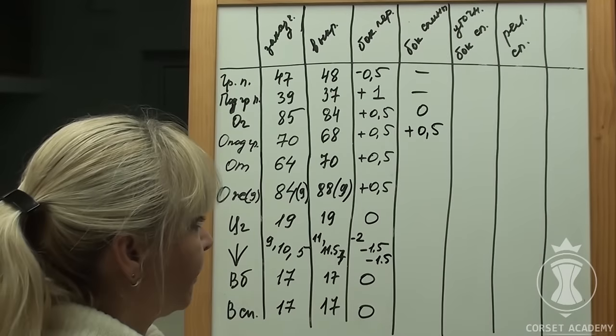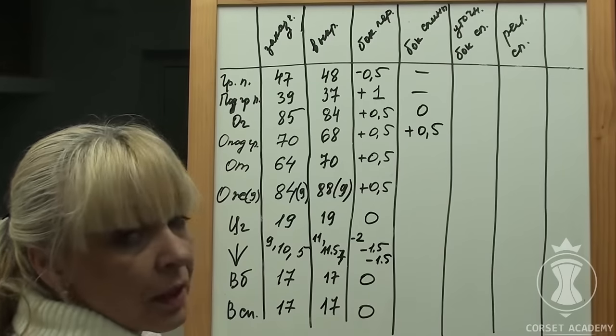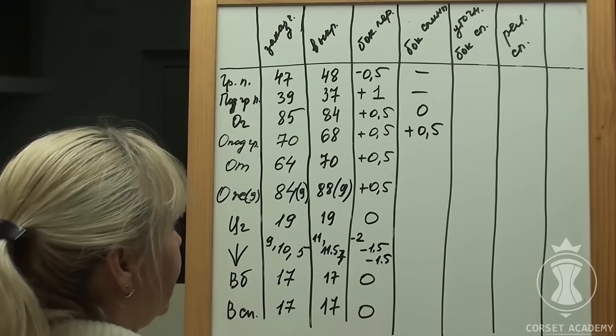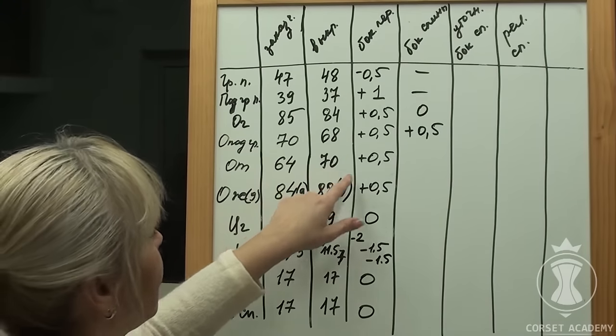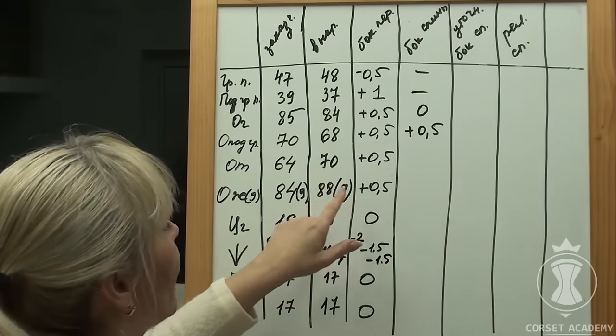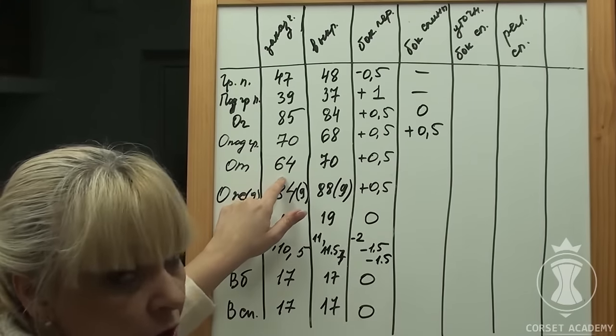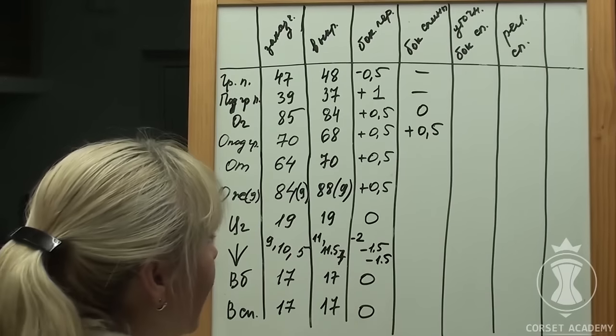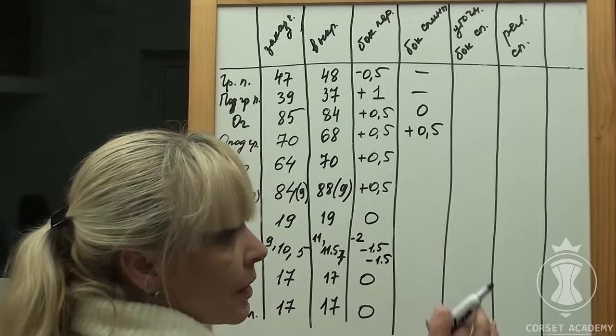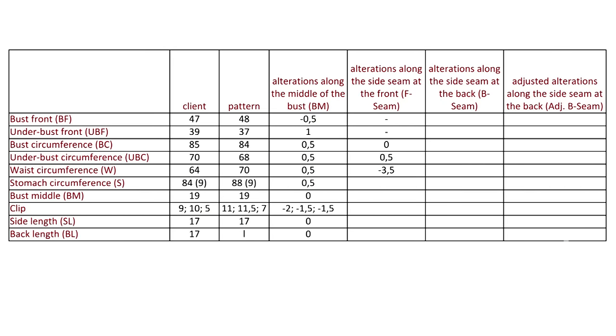Waist circumference: it's a whole different situation here. The pattern was already too large in the waistline at 70 cm, and we have added another cm. The client's measurement is 64 cm. Therefore, 71 minus 64 equals 7 cm. I divide 7 cm by 2 and get 3.5 cm that should be removed from each side at the waistline level.